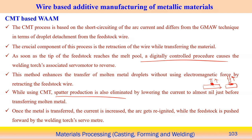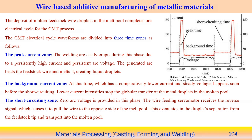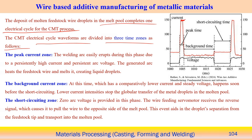A digitally controlled servo motor system is used to control metal transfer in the CMT process. One complete CMT electrical cycle is divided into three zones: peak current zone — where the feedstock wire is heated and melted and a metal droplet is created; background current zone — a low current phase before short circuiting that prevents formation of very large droplets; and short circuit zone — where zero voltage is applied and the droplet is transferred without arc.